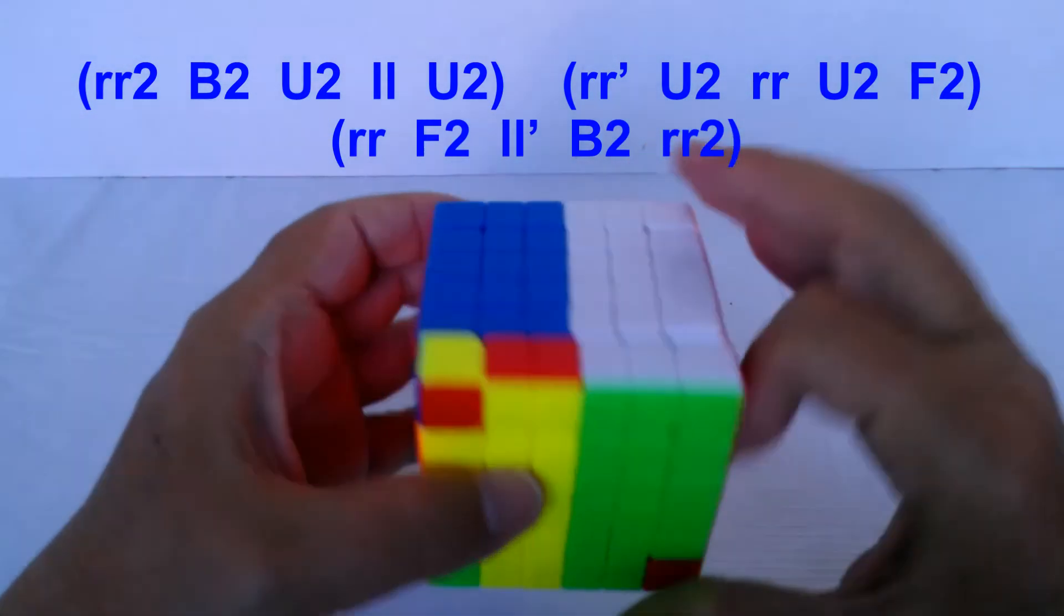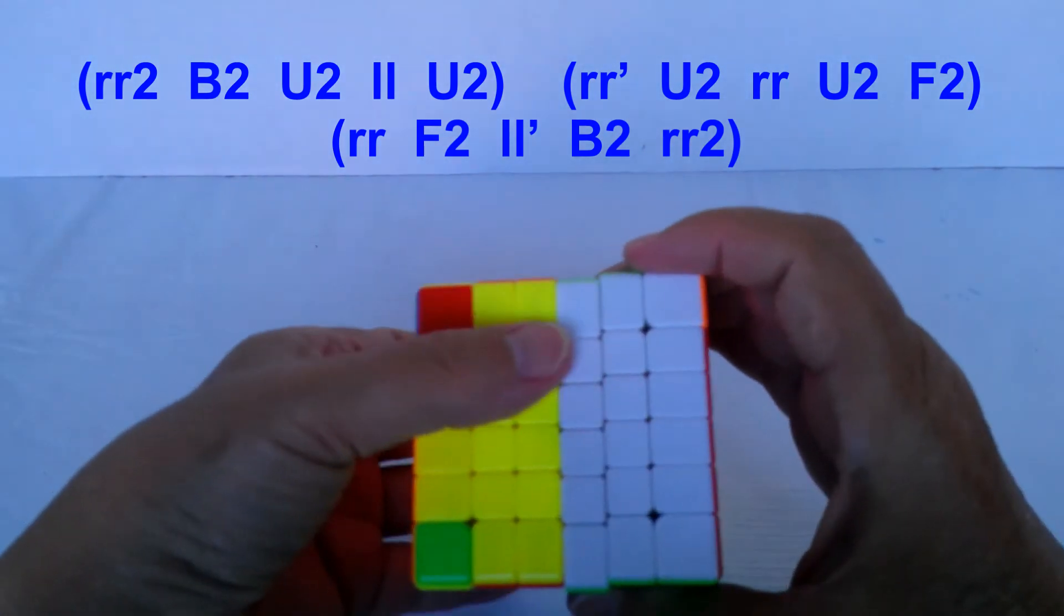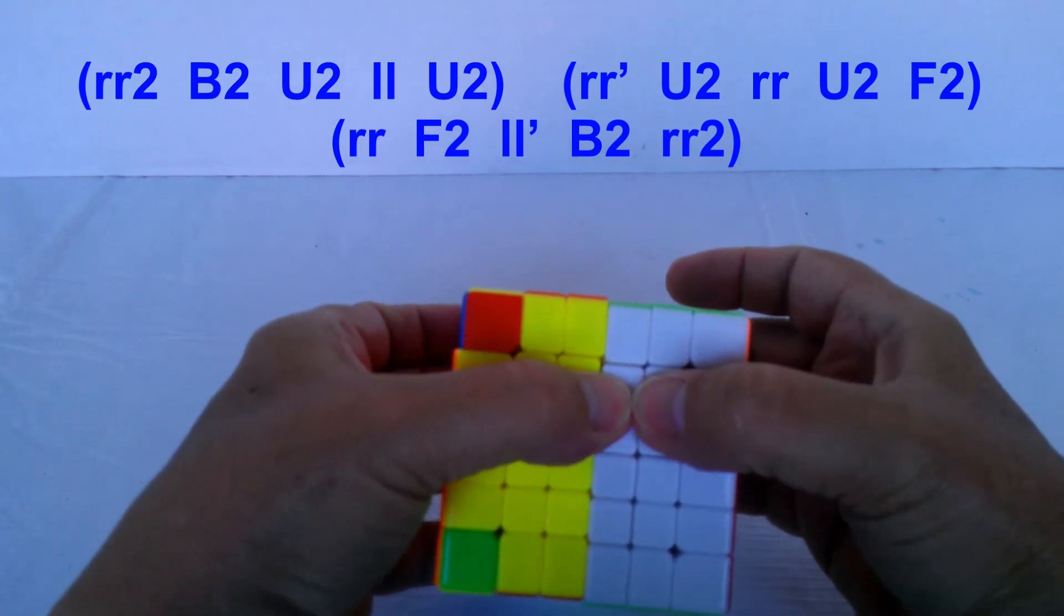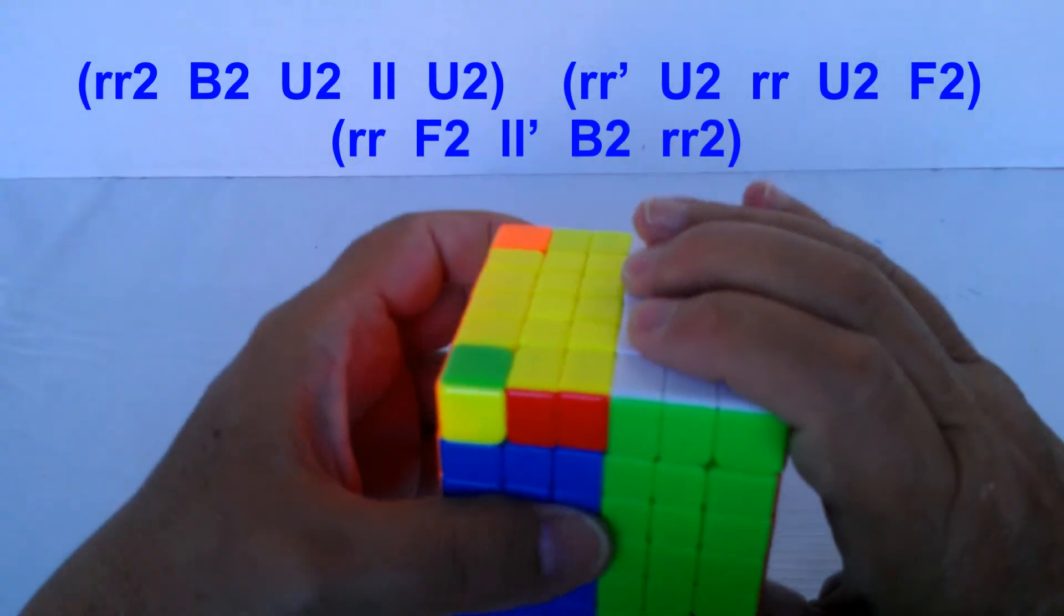F2, then L prime wide, B2, and then R wide double.